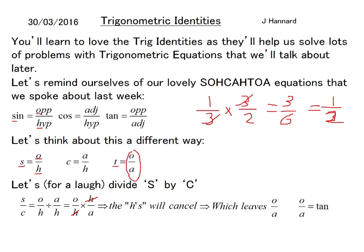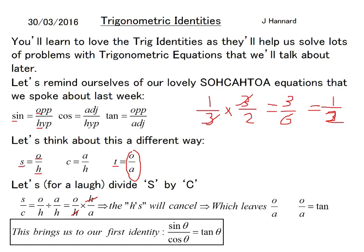But what is O over A? Well, O over A equals tan because it's opposite over adjacent. So that brings us to our first identity, which is that any sin theta over the cos of the same theta will equal tan theta. You don't really need to learn how to prove it, just learn that sin over cos equals tan.